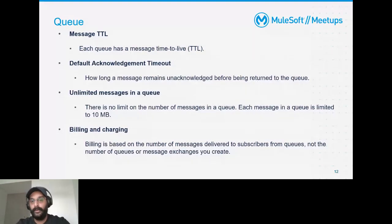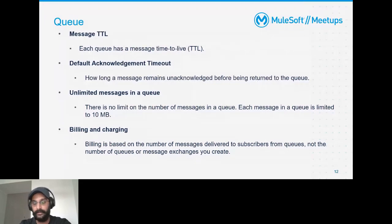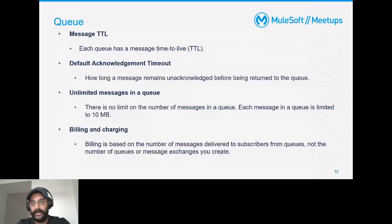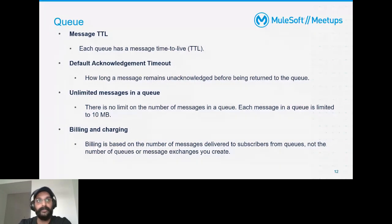Another question — why use MQ? MQ is used when you want to perform asynchronous communication and process messages at your own pace, depending on how much the consumer can handle. You want reliability for your messages. MQs are similar to ActiveMQ and JMS — Java Messaging Service — but Anypoint MQ is totally dedicated and managed by MuleSoft itself.